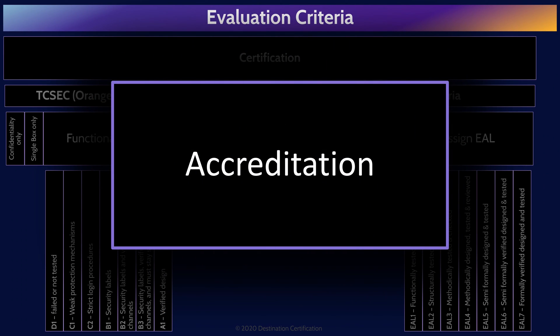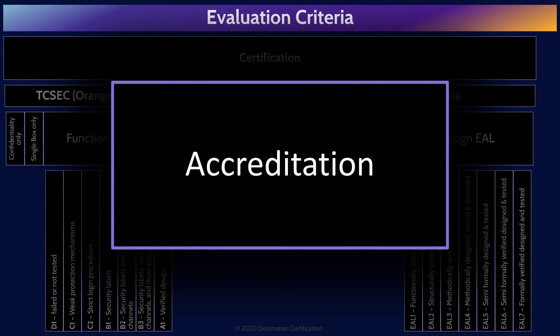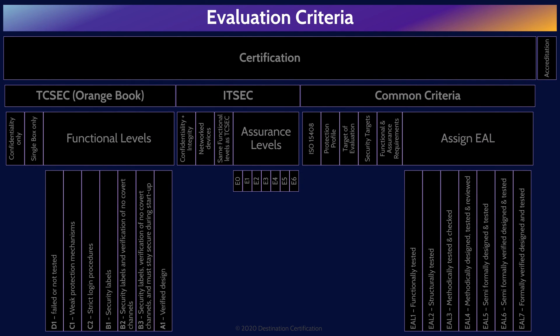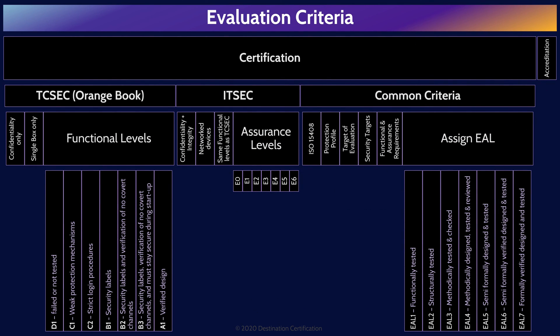Last but certainly not least, the final major piece of evaluation criteria: accreditation. As discussed at the beginning, the whole point of evaluation criteria is to help an organization evaluate and compare different products and choose the best solution. The final step in selecting a product is management's approval and sign-off — this is accreditation: official management sign-off for a set period of time to purchase and deploy a product in the organization. And that is an overview of evaluation criteria within Domain 3, covering the most critical concepts to know for the exam.